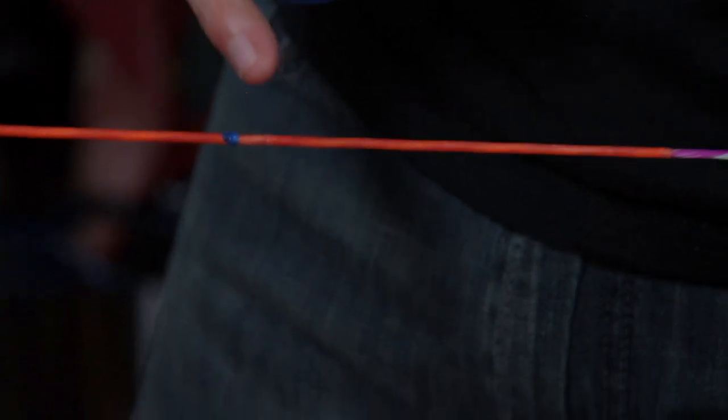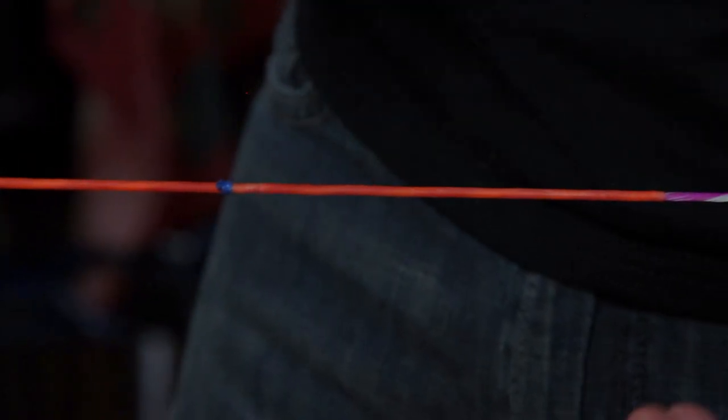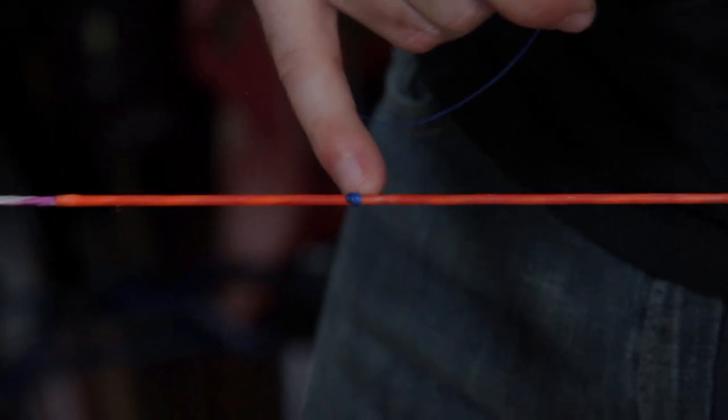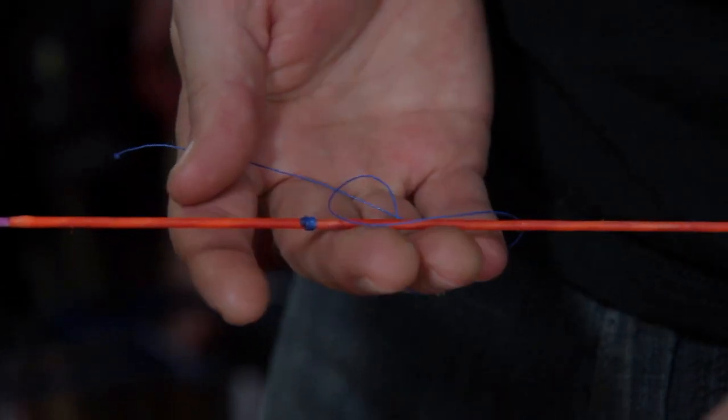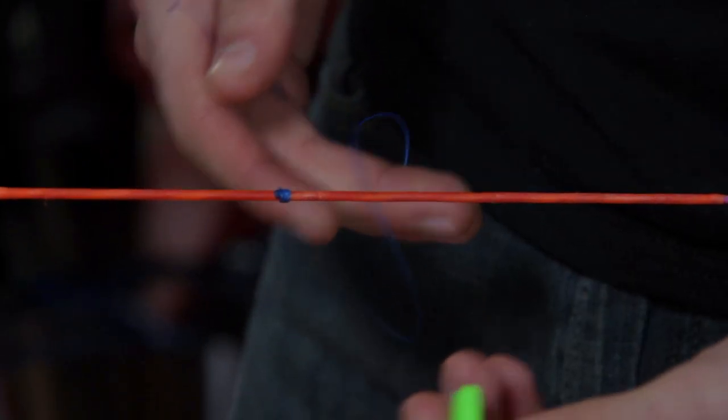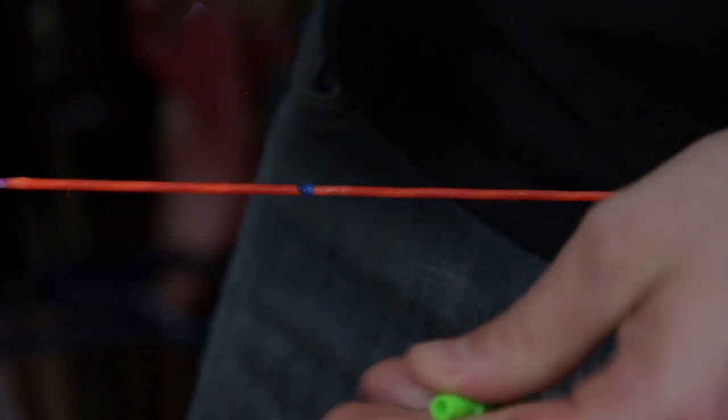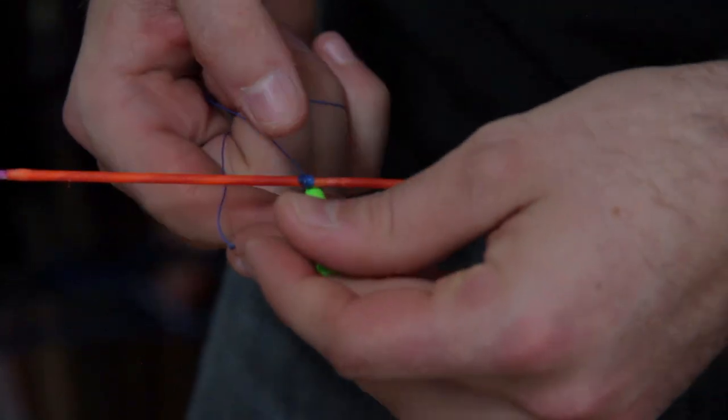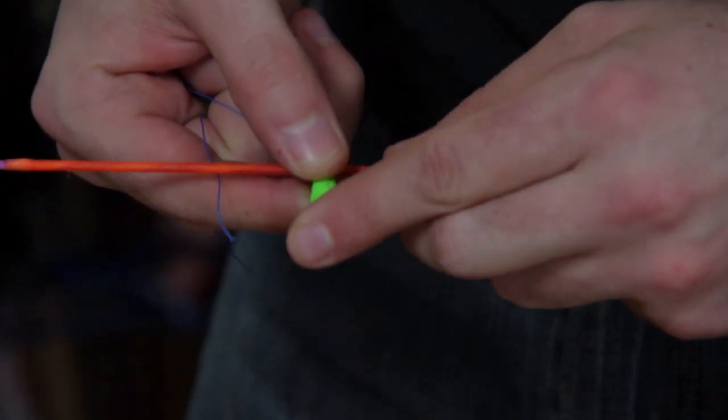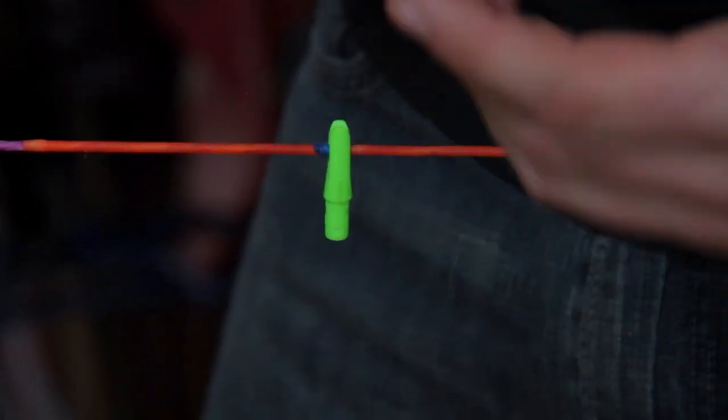Now since I already have one on here, I normally shoot with two knocking points. So, this will be my top knocking point and I usually put on a bottom knocking point. So if you have the first one done marked with your marker, you put it on. I will show you how to put on the second one. This one I will actually go through making the knocking point itself.